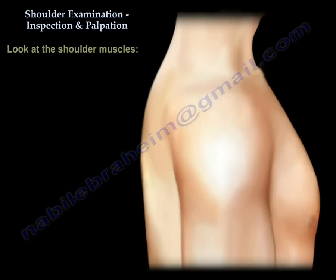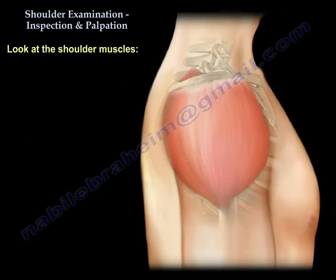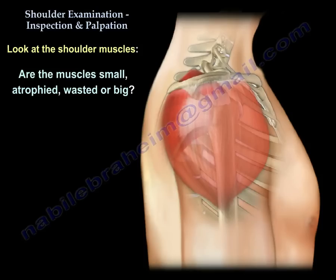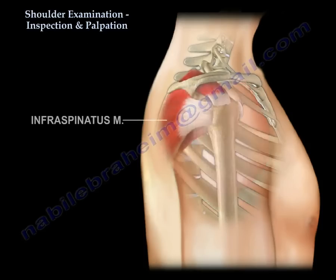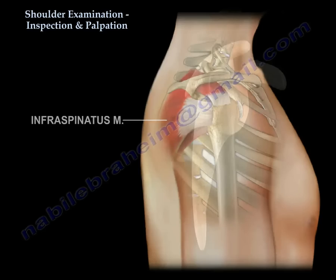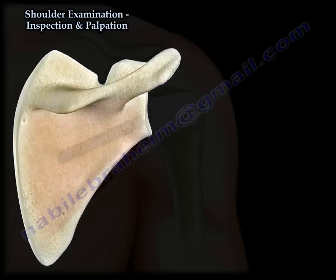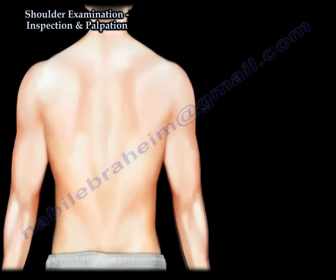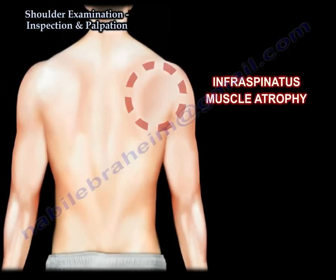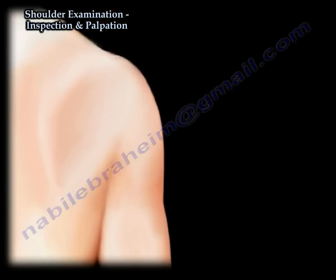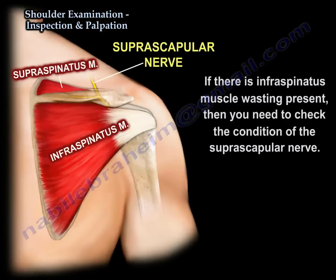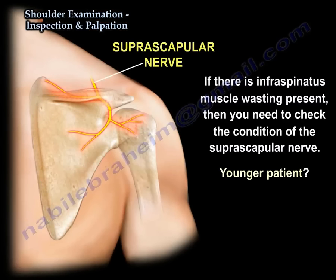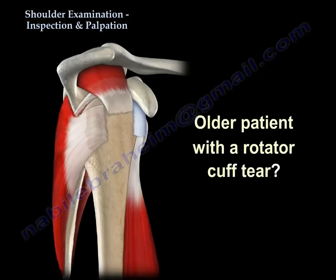We start looking at the muscles. Is the muscle small, atrophied, wasted, or big? You look at the back and find that infraspinatus wasting is present. Then you start thinking of suprascapular nerve if the patient is young, or maybe a cuff tear if the patient is old.